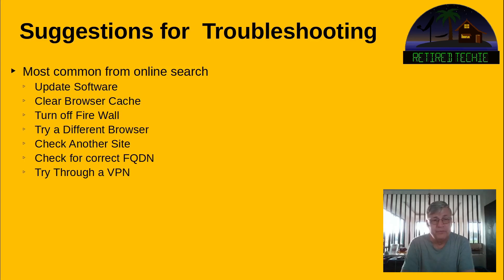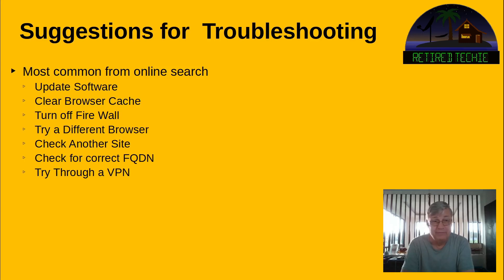Check for a correct fully qualified domain name, or FQDN — this is mainly checking the spelling, the capitalization, and things like that to make sure everything matches up. And then try through a VPN — VPNs solve problems, but I don't think this is one of them. For example, I know Converge throttles my YouTube stream, because every time I set my VPN up and stream YouTube through it, it goes fine; when the VPN's off, it slows down a lot. So VPNs solve problems, but I don't think this is one they're going to solve.